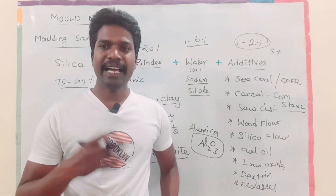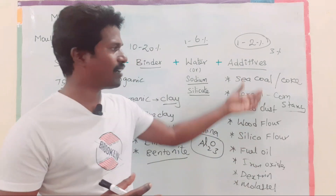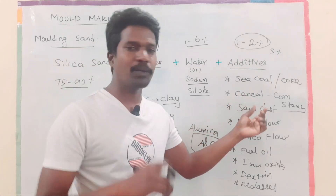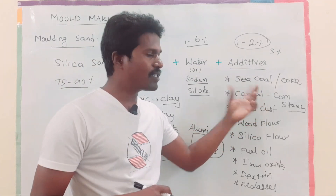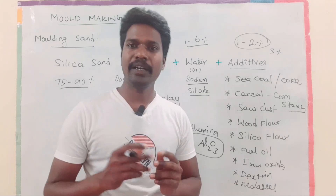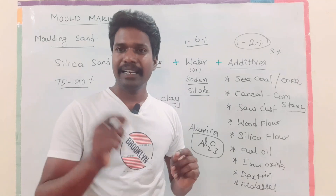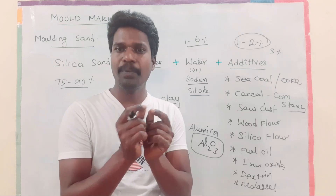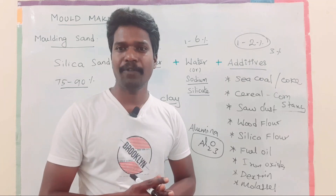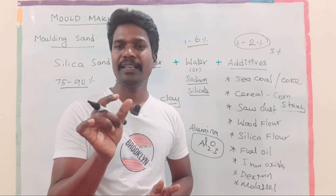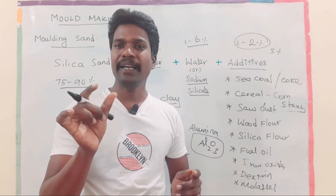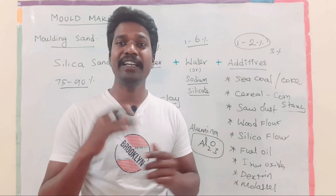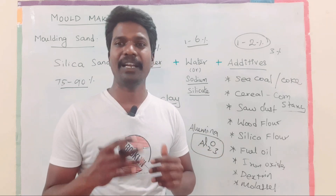When molten metal is poured, it burns and creates gaps between the sand particles. The sand particles expand into these gaps. If there is no gap available, the expansion leads to defects such as buckling and other casting defects.